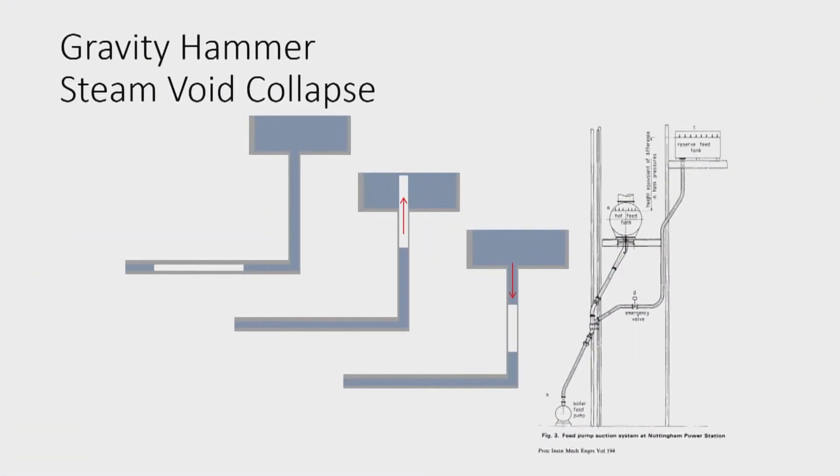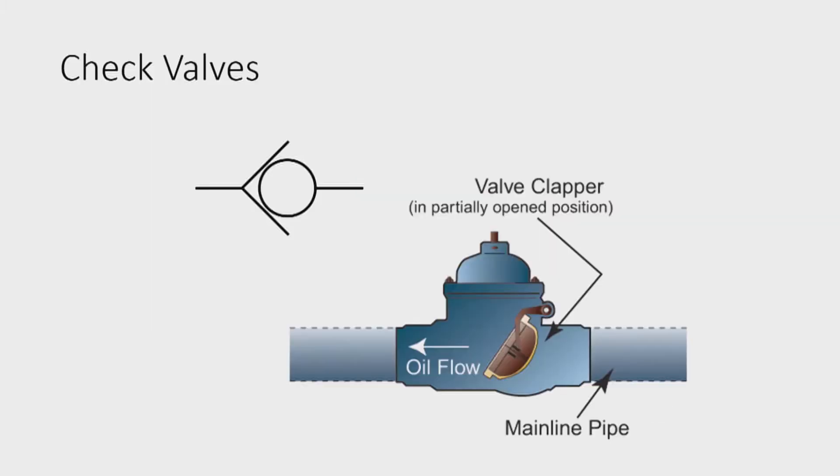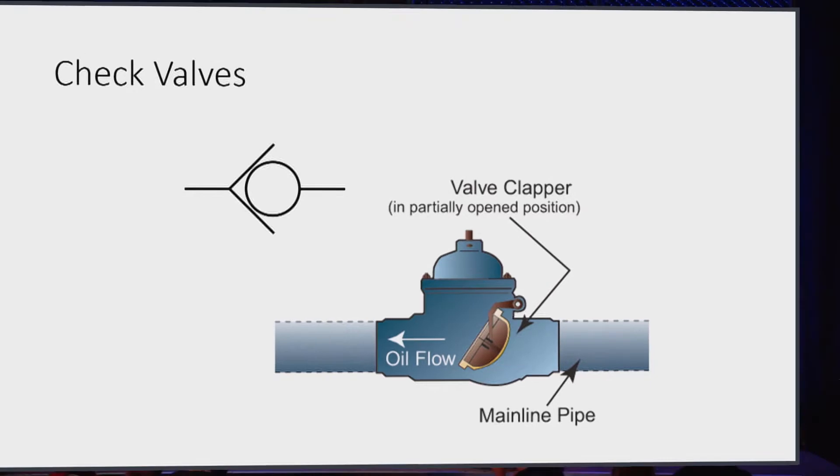This is what's known as a gravity hammer or steam void collapse, where we can push a bunch of steam through the system into a tank that's higher, and then as the stuff falls, then things compress and bad things happen. You can hit check valves. Pushing a motor against a check valve is a great way to start generating a bunch of pressure transients.